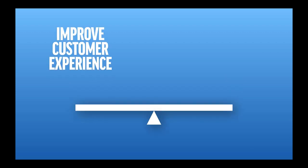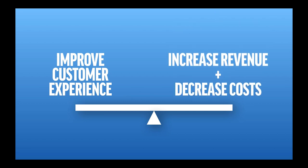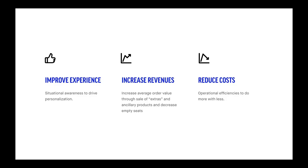More than other organizations, airlines are having to balance three big problems. Number one: they have to improve customer experience, but at the same time increase their revenues and decrease their costs. Improving experiences — in a digital sense — means improving situational awareness to drive personalization and make things more relevant for passengers and potential customers. For increasing revenues, it's about increasing average order value through sales of extras and ancillary products, and decreasing empty seats on planes. And thirdly, for reducing costs, it's really about operational efficiencies — doing more with less.